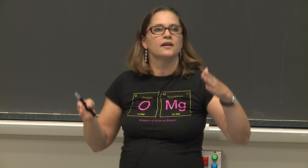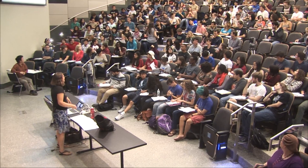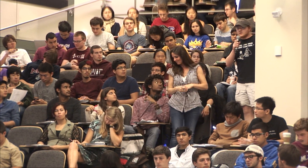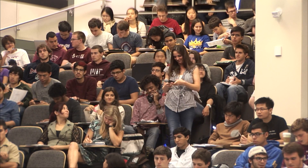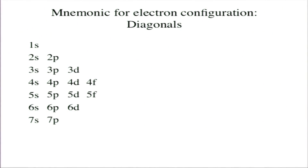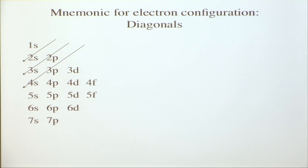You're also responsible for knowing the order of filling. One method: write out 1s, 2s, 2p, 3s, 3p, 4s, 5s, 6s, 7s and draw diagonal lines — you fill 1s, then 2s, 2p, 3s, 3p, 4s, 3d, 4p, 5s, et cetera. Another way: use the periodic table. The left block fills s orbitals, the right block fills p orbitals (except helium), the transition metals fill d orbitals, and the lanthanide/actinide rows fill f orbitals. F orbitals begin at principal quantum number 4.